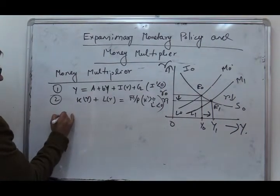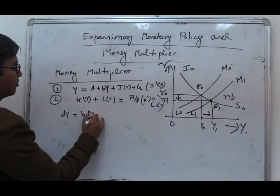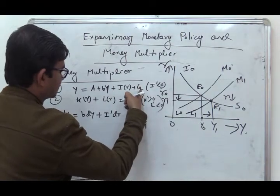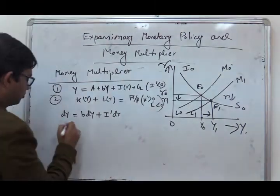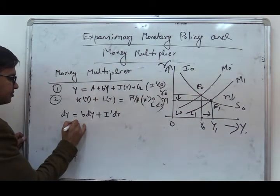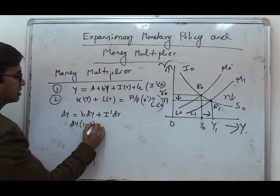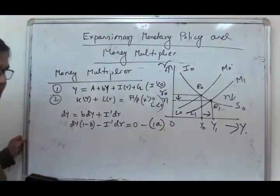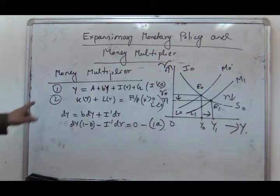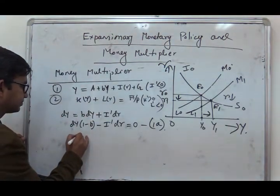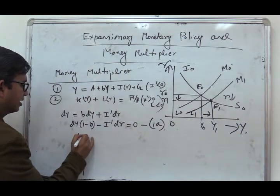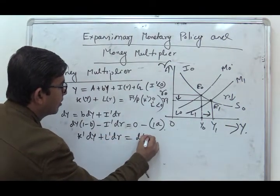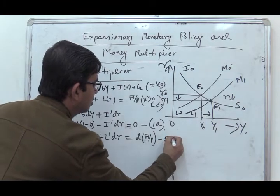Differentiating equation 1, we get DY(1 − B) − I'·DR = 0, since government expenditure is constant. This is equation 1A. Differentiating equation 2, we get K'·DY + L'·DR = d(M̄/P). This is equation 2A.